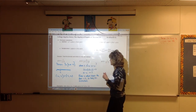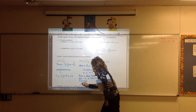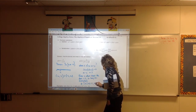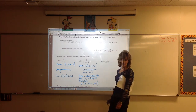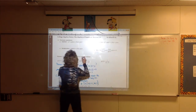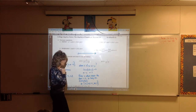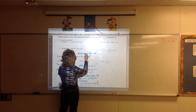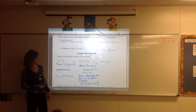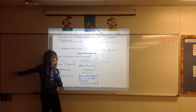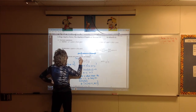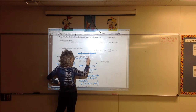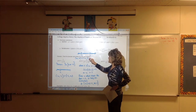The domain for this one is the set of all x's such that x cannot be negative 4 and x cannot be 3. In interval notation from left to right: from negative infinity up to negative 4, don't include negative 4, then union a piece from negative 4 to 3, then union a piece from 3 to infinity.